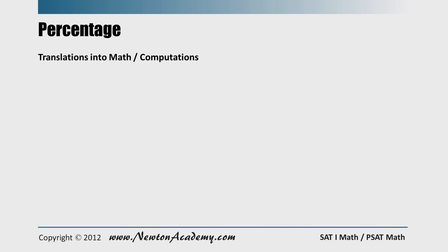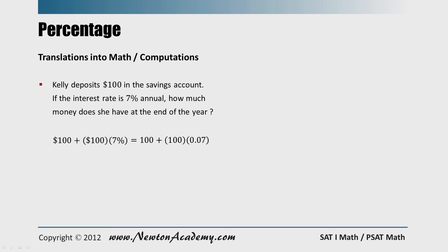Now, this is the type of question that you will definitely see on SAT math. Kelly deposits $100 in the savings account. If the interest rate is 7 percent annual, how much money does she have at the end of the year? Well, she originally has $100, and 7 percent of 100 is added to that as an interest. So you change 7 percent into 0.07, and you can combine with 100 like this, and it becomes 100 times 1.07, which is 107.